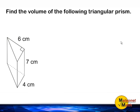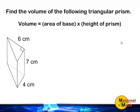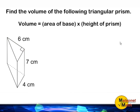We are trying to calculate the volume of the shown triangular prism. To find the volume of any triangular prism, we must first find the area of the triangular prism's base and multiply that answer by the height of the prism.